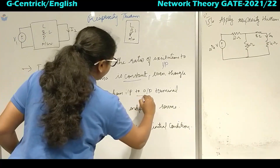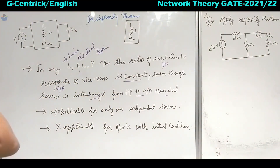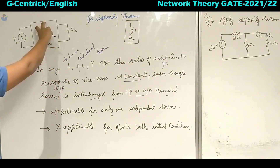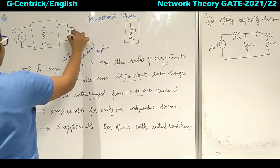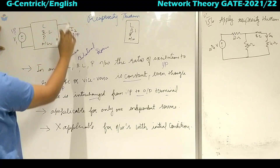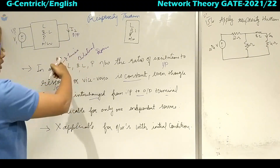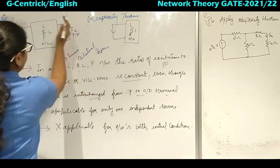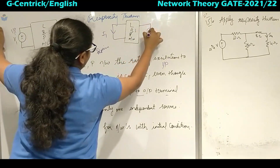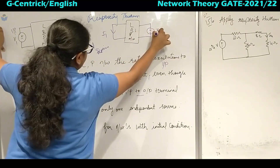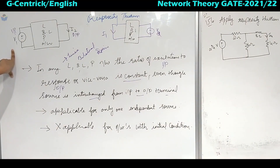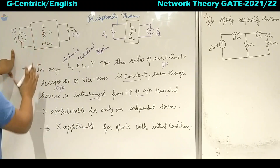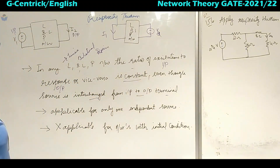This holds even when the source is interchanged from input to output terminal. What this statement means is: in a linear bilateral passive network, excitation is given as input and output as current. When they are interchanged — this part comes to LHS and that to RHS, taking it as V2 (already taken as V1) — the ratio of them remains constant.